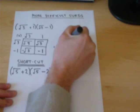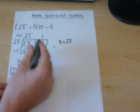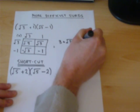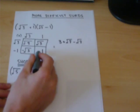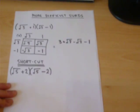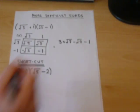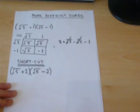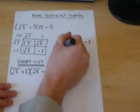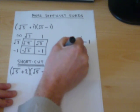We have a root three. We have a minus root three. And we have a minus one. So, the plus root three and the minus root three, they cancel. And three, take away one, equals two.